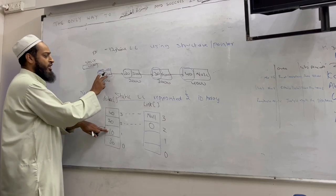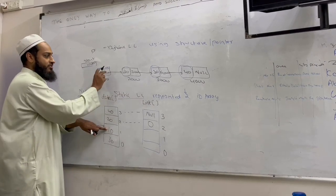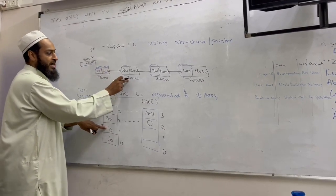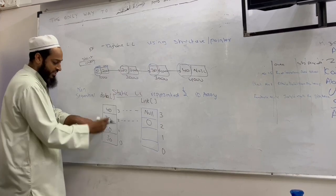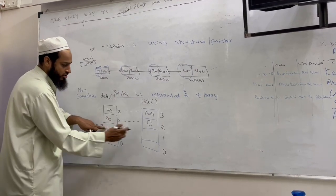Now 10, 10 is pointing to where? It's the link part, right? 2000. Who is there at 2000? 20. 20 at what index? 2. So this will point to 2.